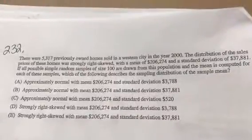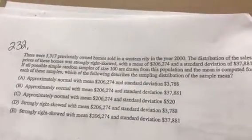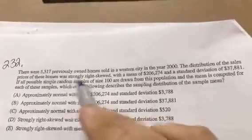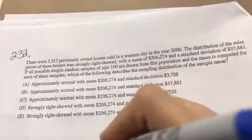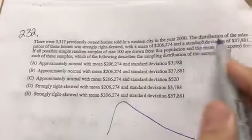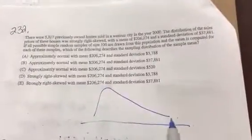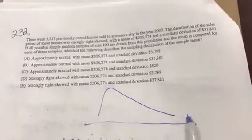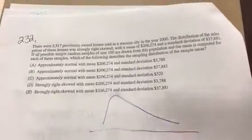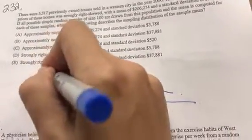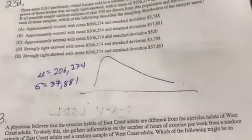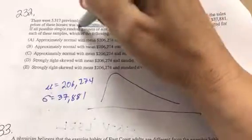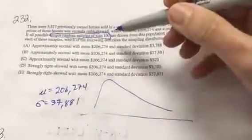The question states, there were 5,317 previously owned homes sold in the city in the year 2000. The distribution of sale prices of these homes were strongly skewed right. So it looks something like that. We know that home sales are almost always skewed right because incomes are skewed right. Most people make a good living, and then some people make a whole lot. These are the managers and the people that are in charge of the rest of us. Now it states, if you knew that the mean was this, and you knew the standard deviation was that, if all possible, simple, random samples of the size 100.